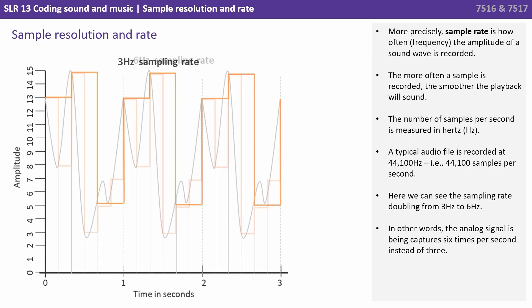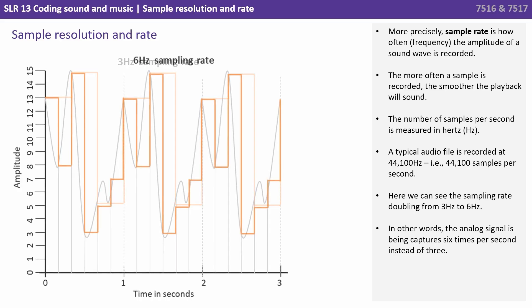Here we can see the sampling rate doubling from three hertz to six hertz. In other words, the analog signal is being captured six times per second instead of three.